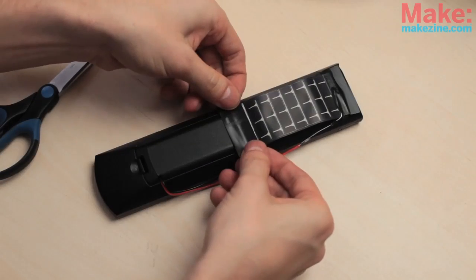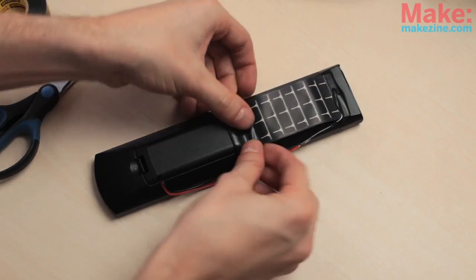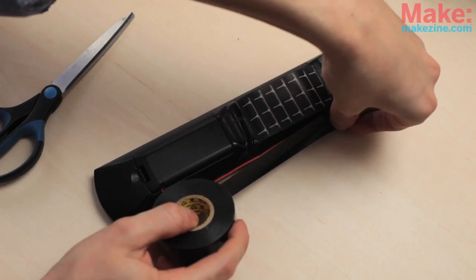Of course, don't tape over the light-sensitive part of the solar cell. And there you have it, a solar charging remote control.